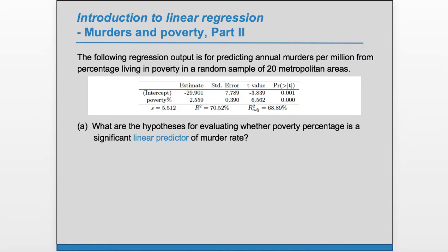The following regression output is for predicting annual murders per million from percentage living in poverty in a random sample of 20 metropolitan areas. What are the hypotheses for evaluating whether poverty percentage is a significant linear predictor of murder rate?